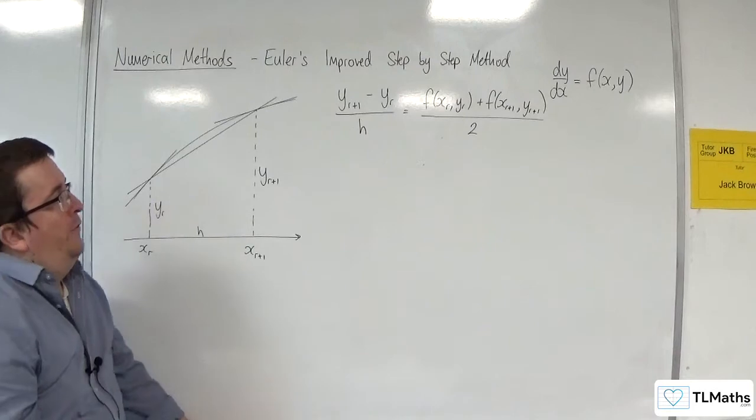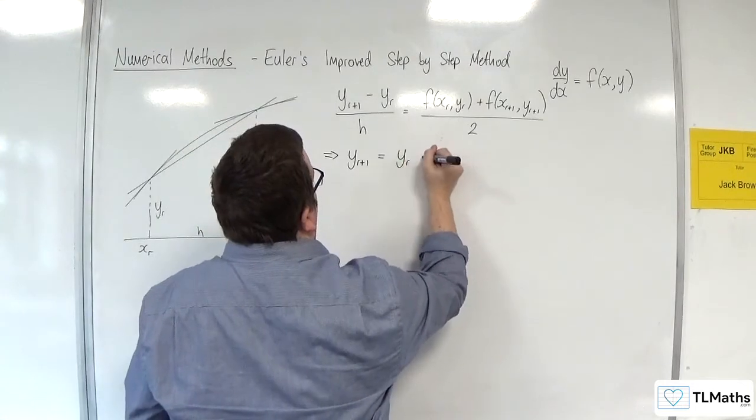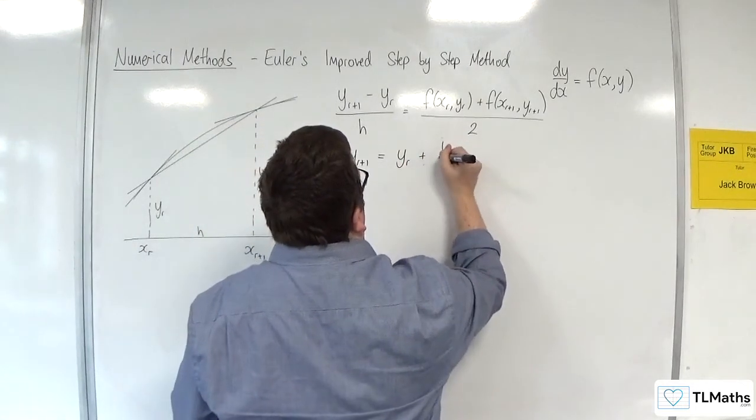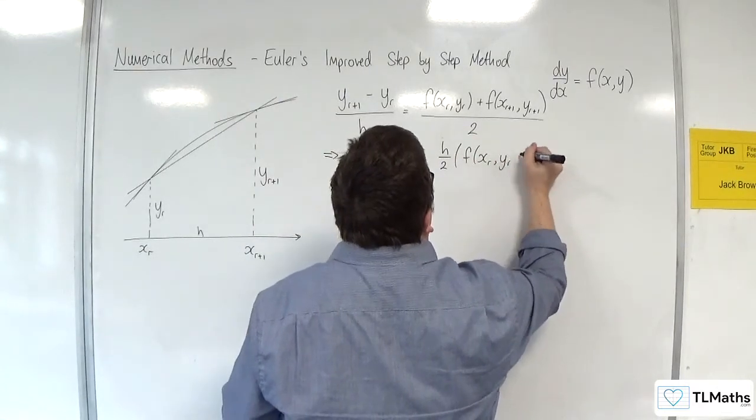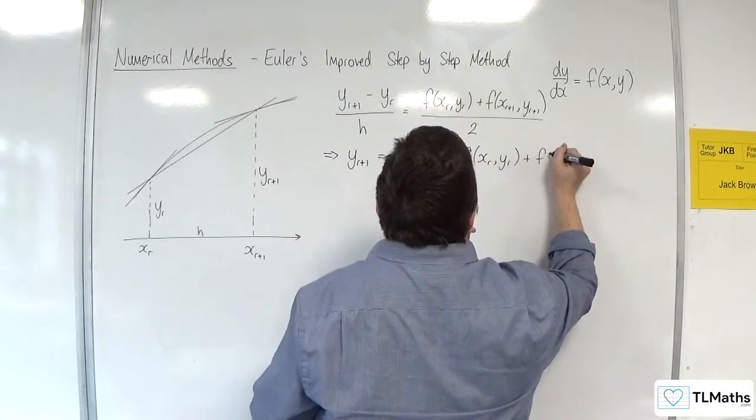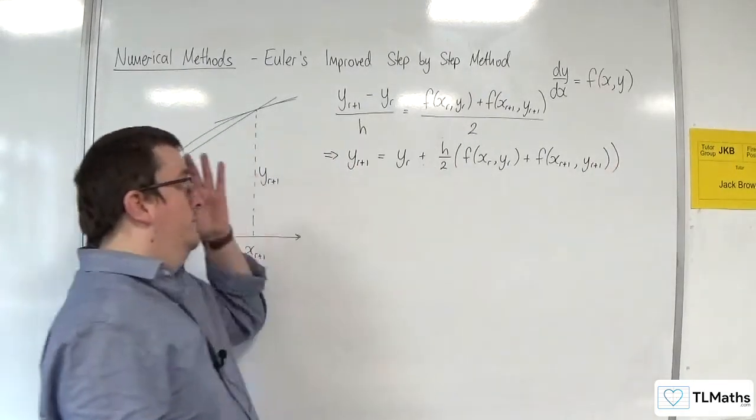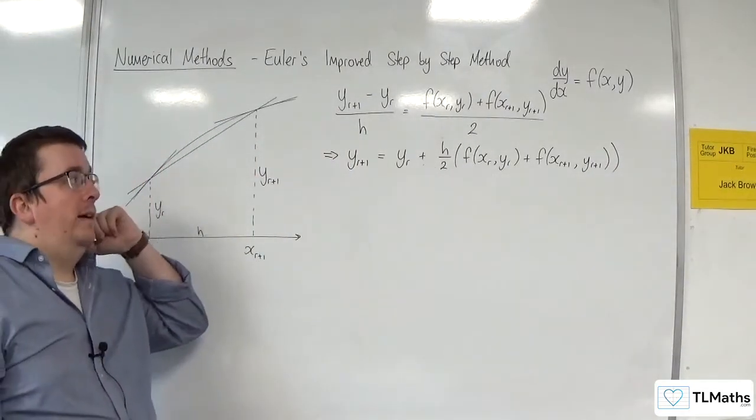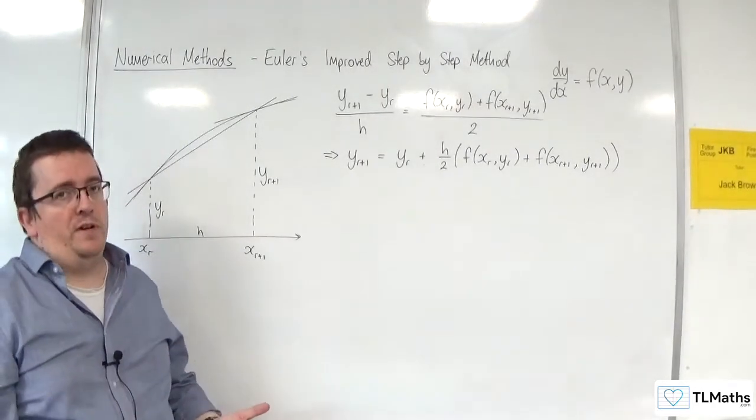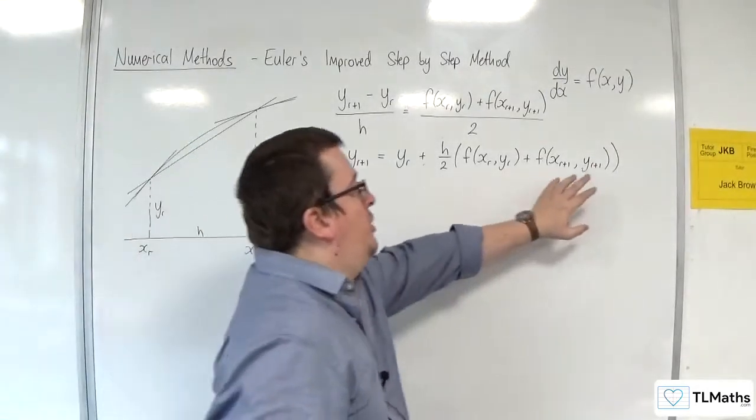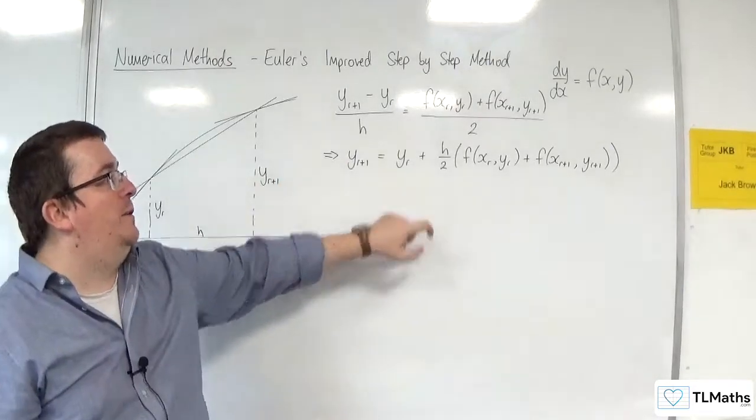So, I would be able to rearrange this to get YR plus 1 is equal to YR plus H over 2 of F of XR, YR plus F of XR plus 1, YR plus 1. And this would be my formula. But the problem is that I'm not actually able to calculate YR plus 1 using this, because YR plus 1 is actually in the right-hand side. Which is a little bit of a problem.